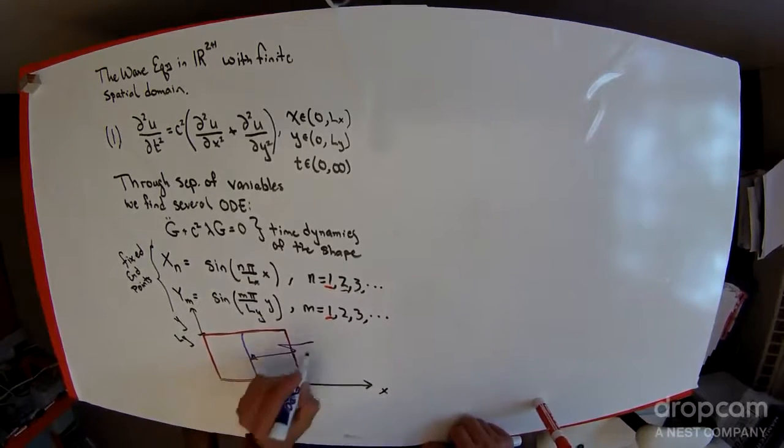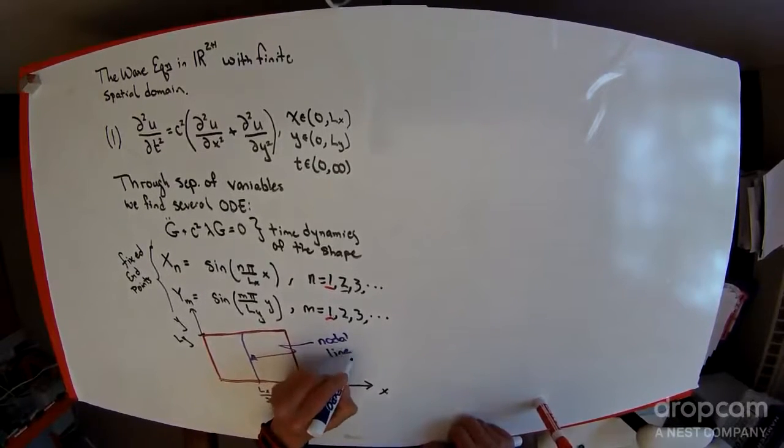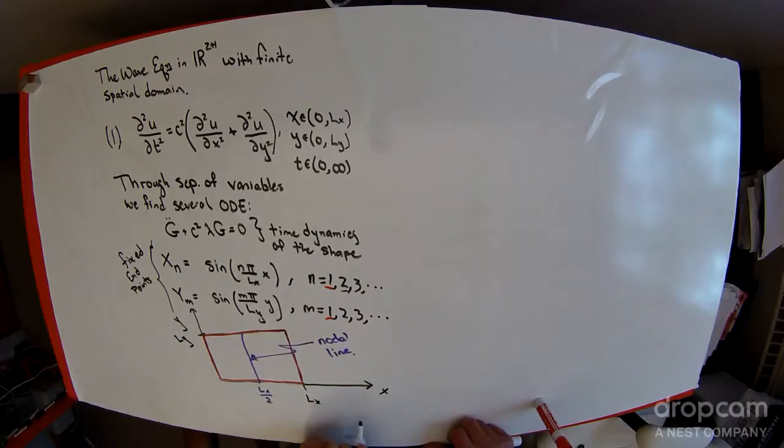And this feature right here is called a nodal line. There are pictures given for the higher order shapes that are created, and what you should notice is that those are all abstractions of the string case.